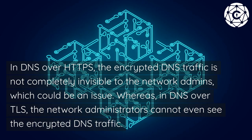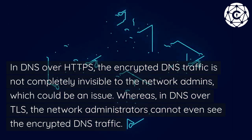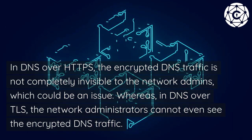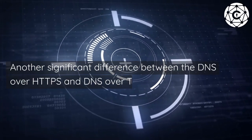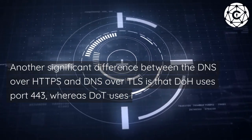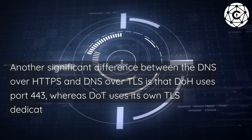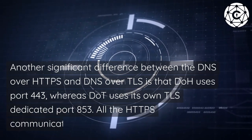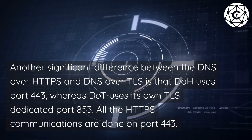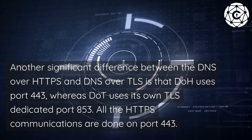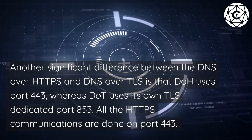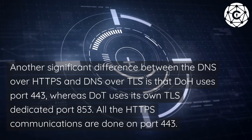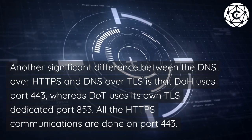Whereas in DNS over TLS, the network administrators cannot even see the encrypted DNS traffic. Another significant difference between DNS over HTTPS and DNS over TLS is that DoH uses port 443, whereas DoT uses its own TLS-dedicated port 853. All HTTPS communications are done on port 443.